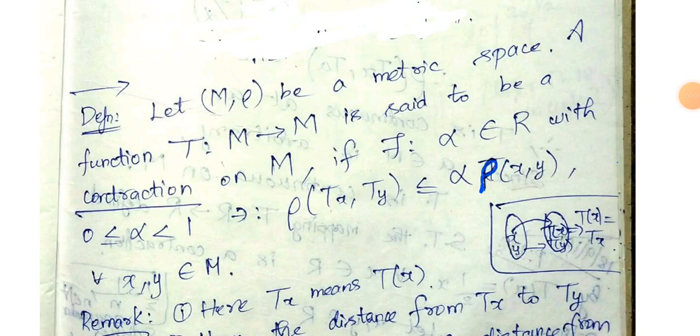This is contraction. Contraction is what we call a definition. Let (M, ρ) be a metric space.